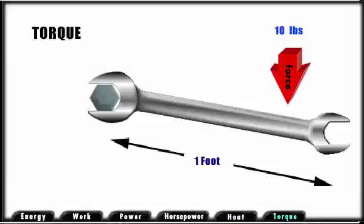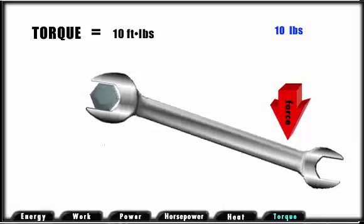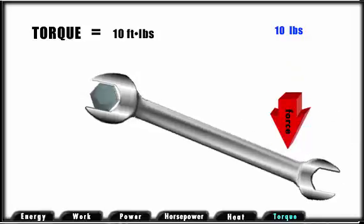Torque is twisting force. It is also measured in foot-pounds. In this illustration, we are producing 10 foot-pounds of torque when we apply 10 pounds of force to a foot-long wrench.